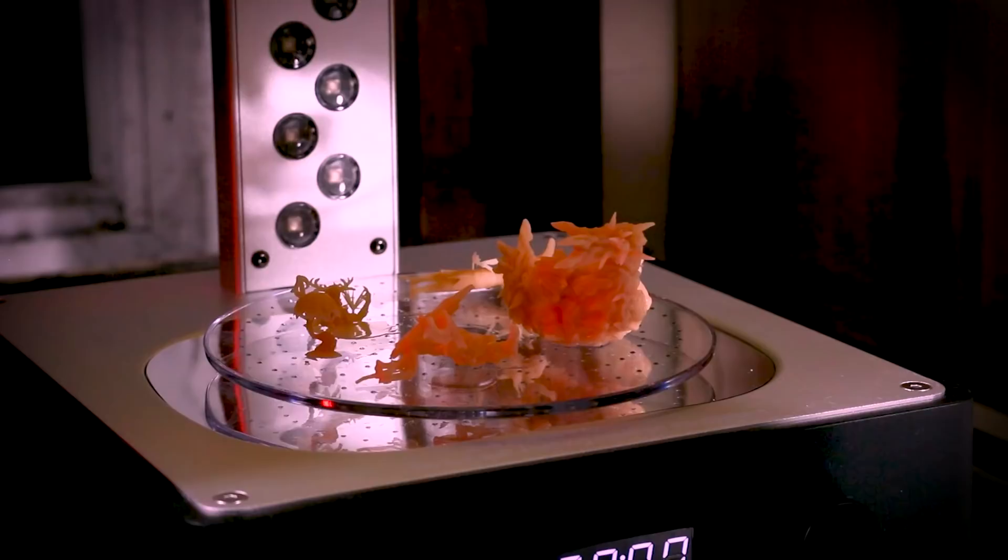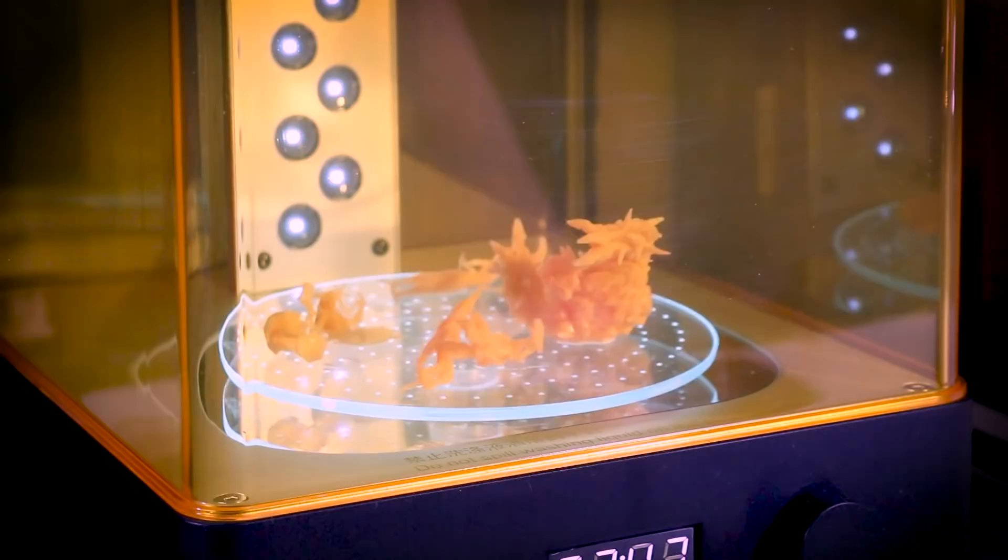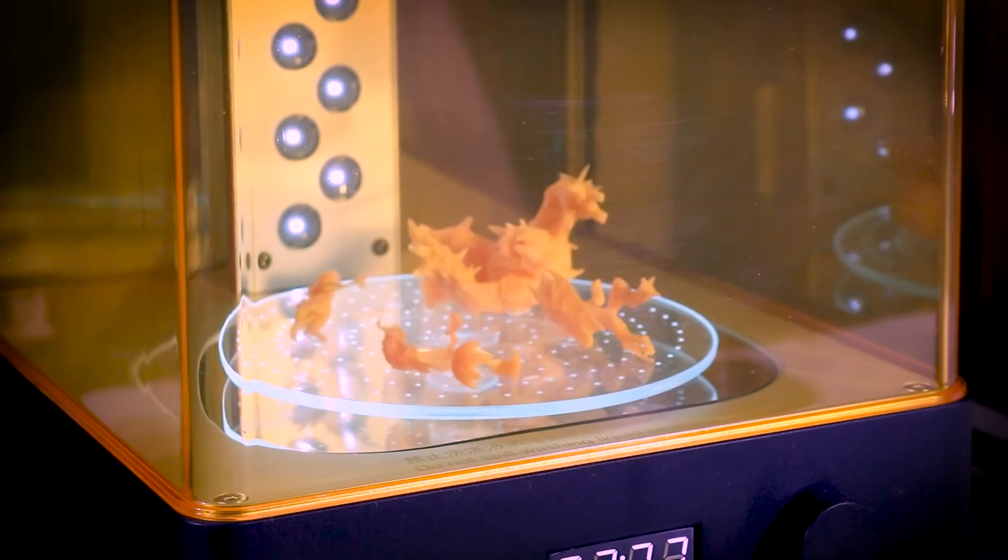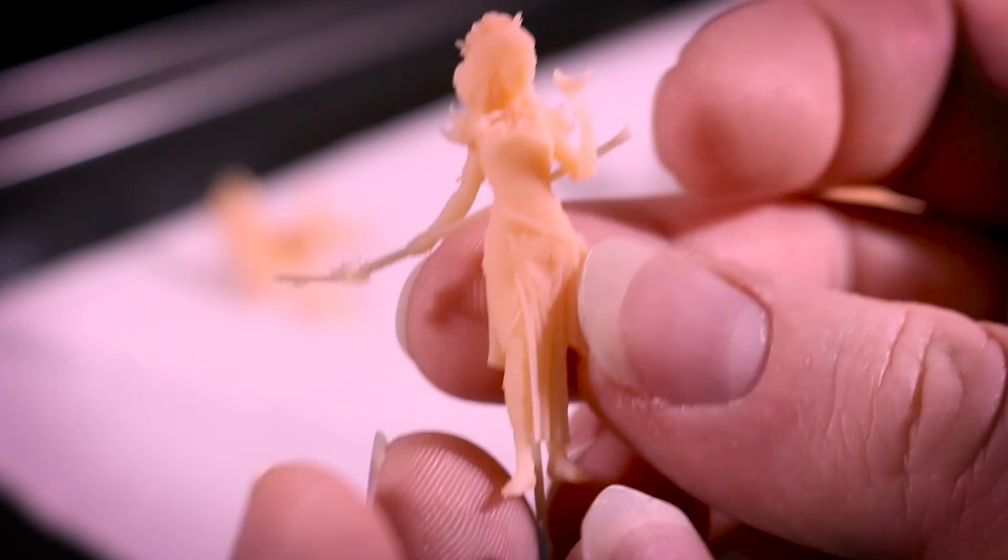Once our models are dry, we can swap the wash and cure to cure mode. And this is as easy as removing the washing tank and putting the mirror and the turntable onto the bed. Then we can put our models inside to cure. I like to cure them for a few minutes, flip them over, and then cure them for another few minutes. The way this works is the UV light inside of the machine makes the resin harden, and you'll know when they're done when you take them out and they are completely hard and no longer sticky.